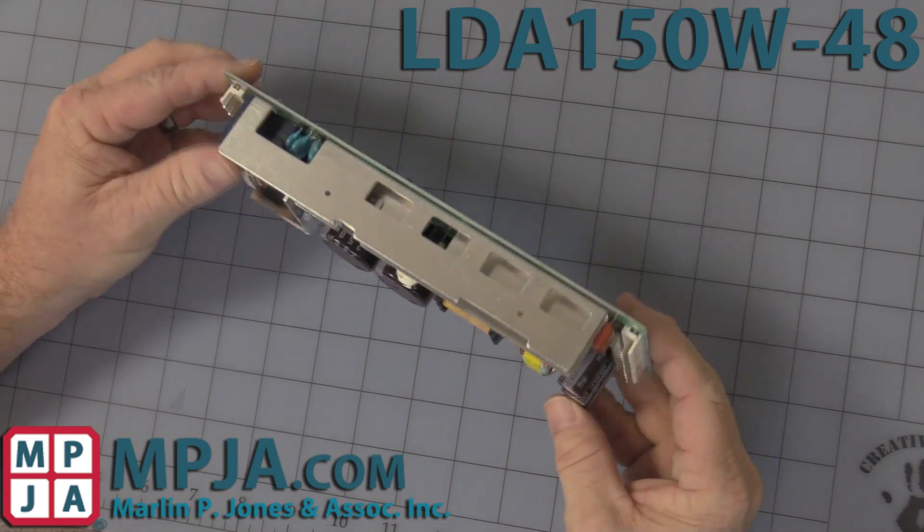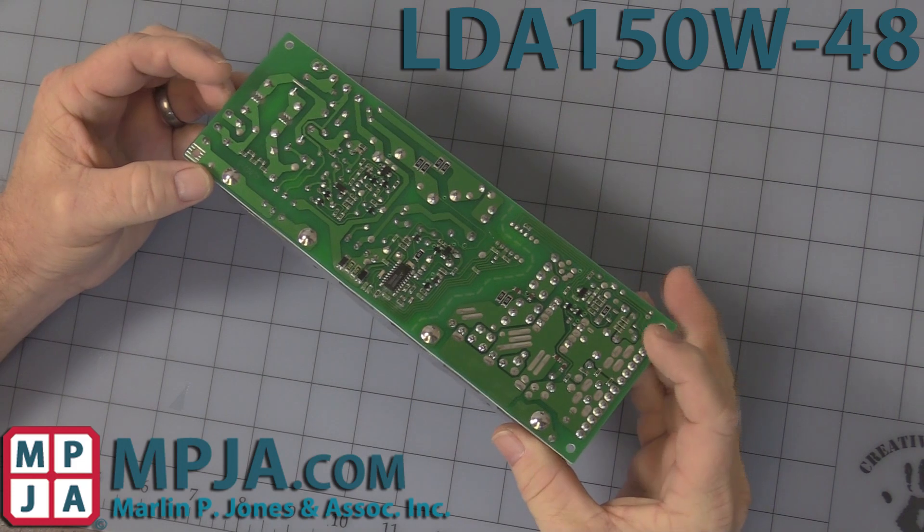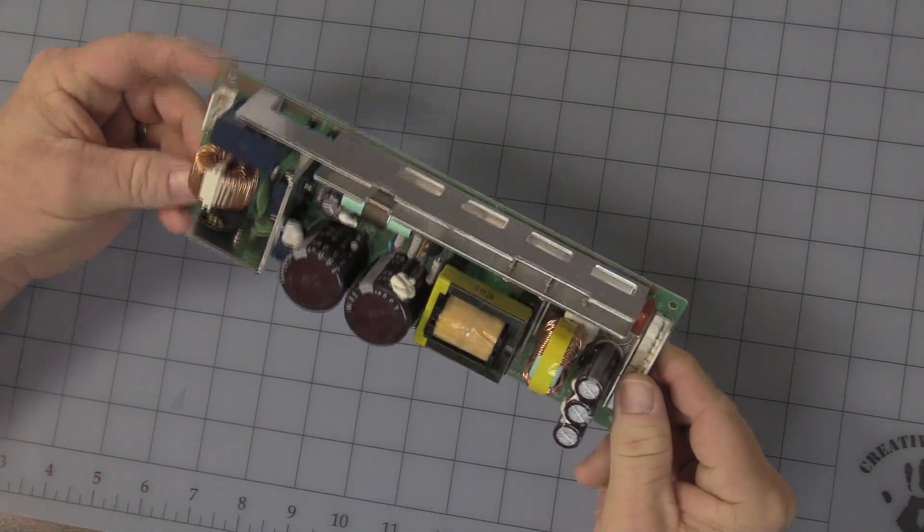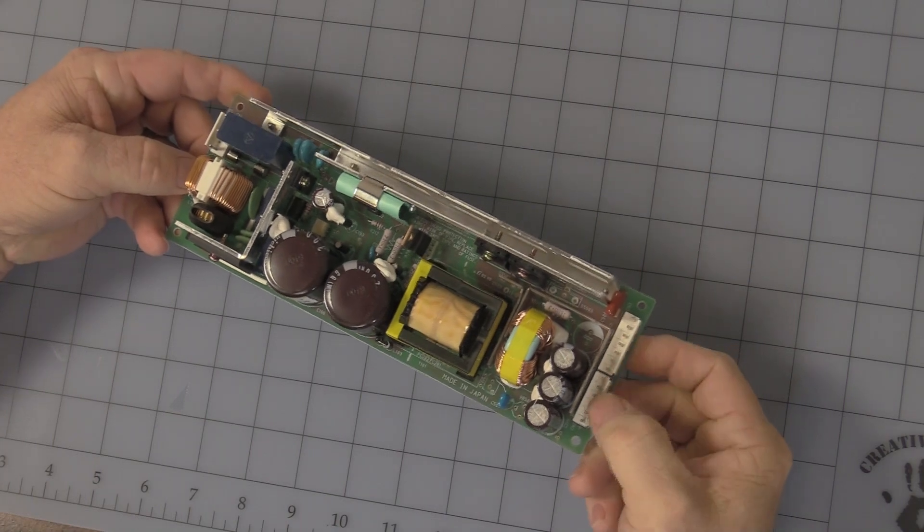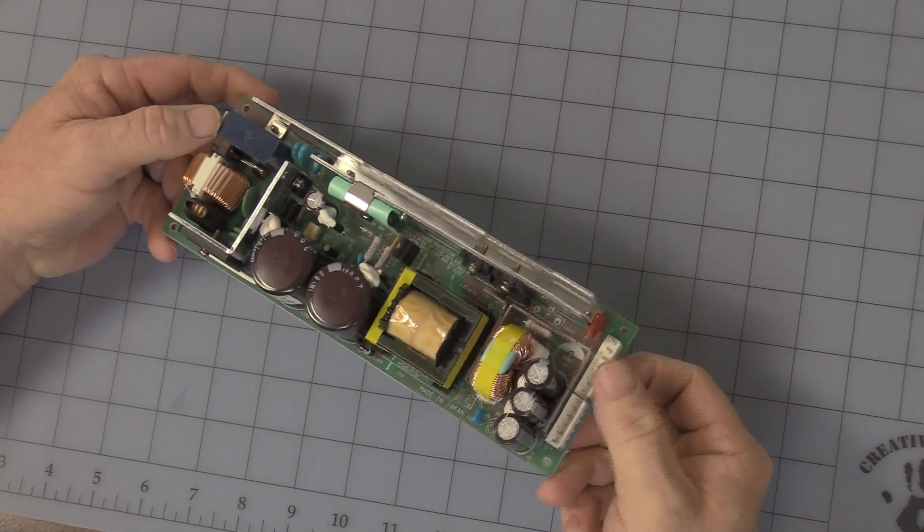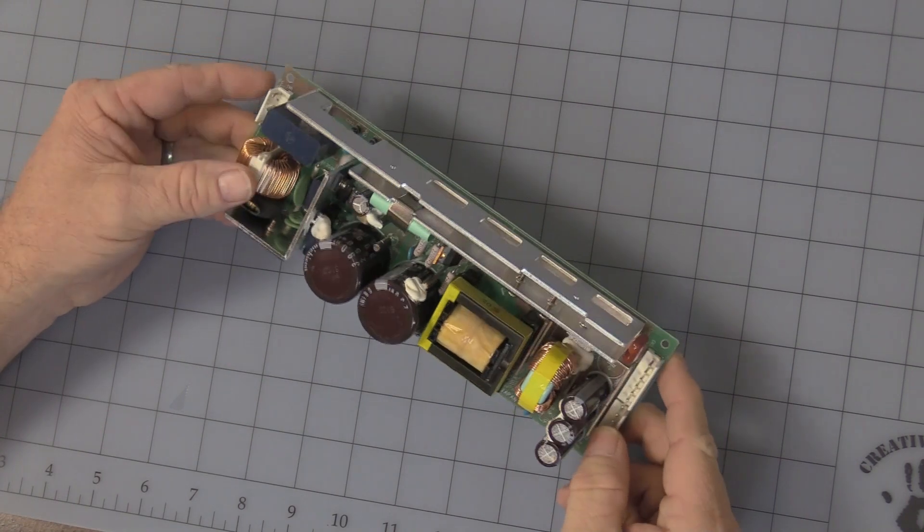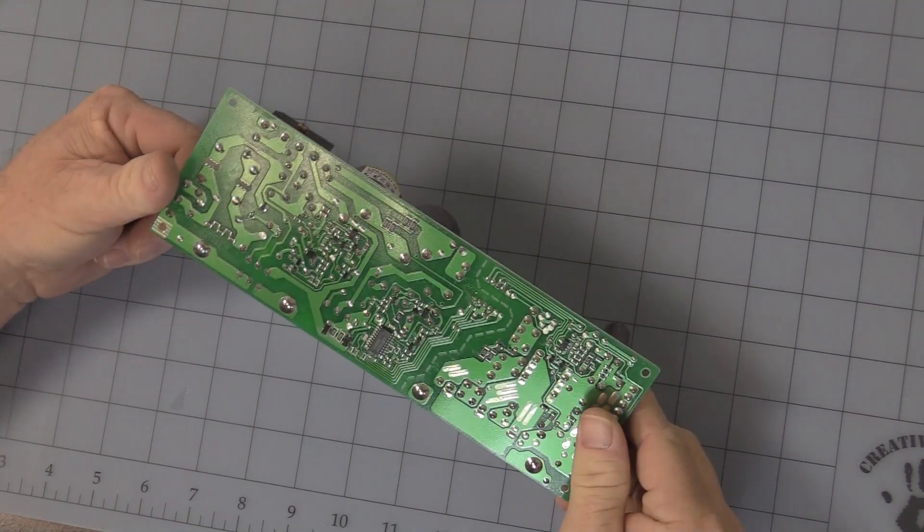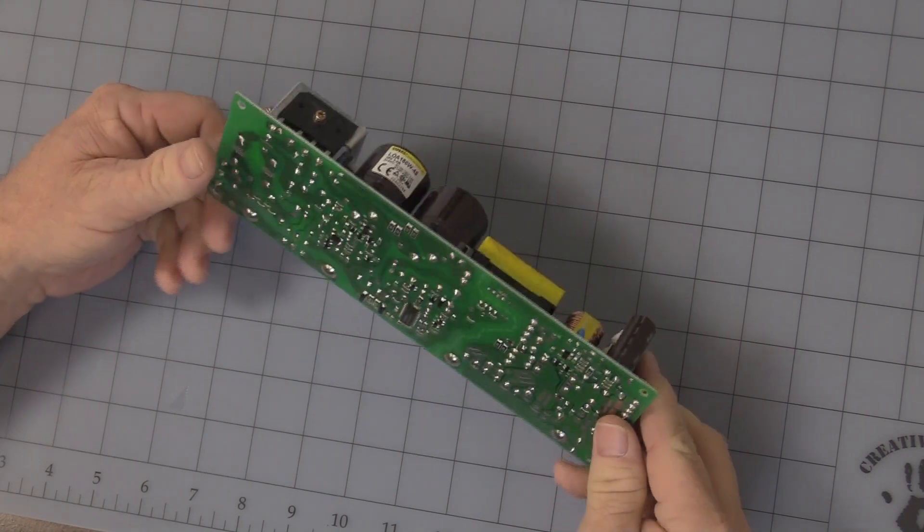As you can see it is just a board level power supply. There is no case, no protection and it does not come with the main connectors. That is the DC output and that is the AC input. You can refer to the datasheet to get the exact model numbers on the connectors.